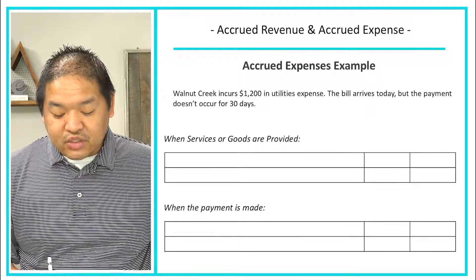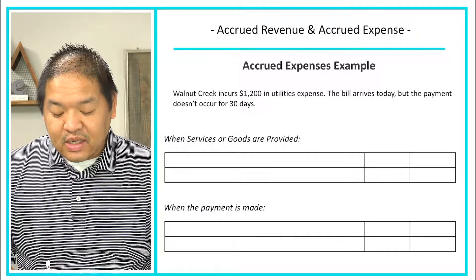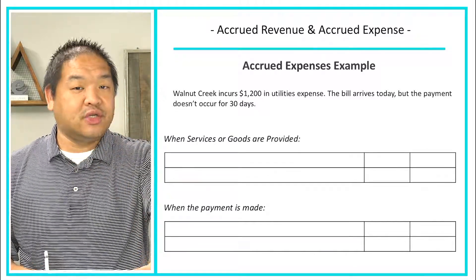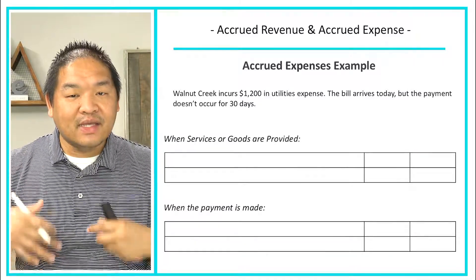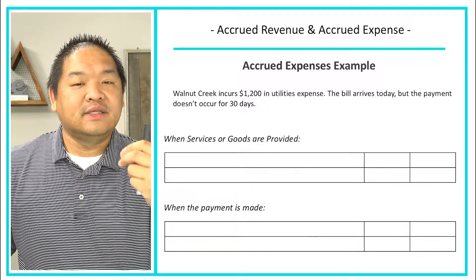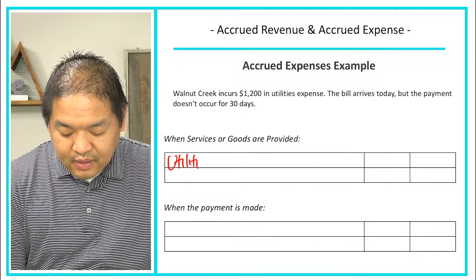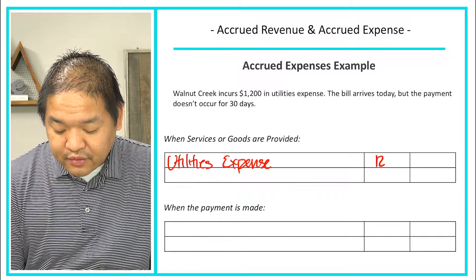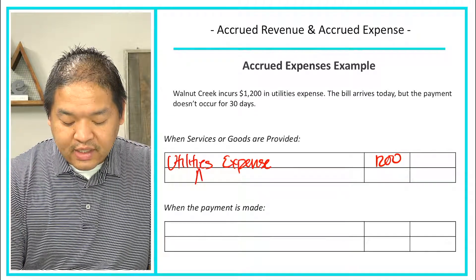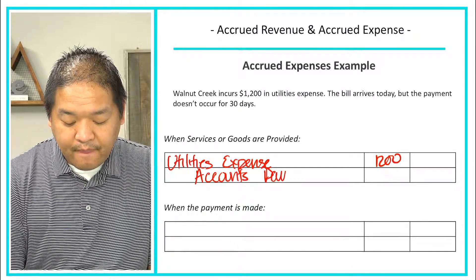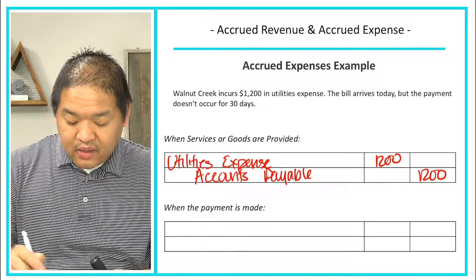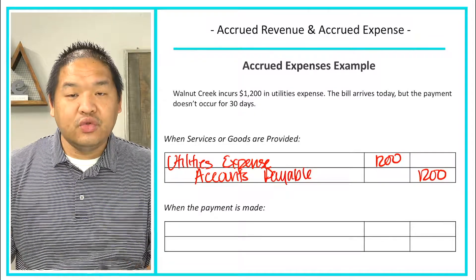Here's an accrued expense example: Walnut Creek incurs $1,200 in utilities expense. The bill arrives today but payment doesn't occur for 30 days. We need to book the expense since we've actually incurred it, so we debit Utilities Expense for $1,200 and credit Accounts Payable for $1,200 — not Cash, because we are not paying in cash yet.